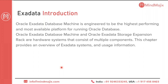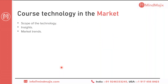Exadata is an engineered system but not the only one. Oracle itself has released Exadata, SuperCluster, Exalogic, and Exalytics. Other vendors like SAP have their HANA engineered system, and IBM has Netezza as an engineered system. This is not a monopolistic market — many people have a myth that Exadata is a monopoly, but there is no monopoly in the IT industry. Across all these engineered systems, Exadata is certified to be the best.